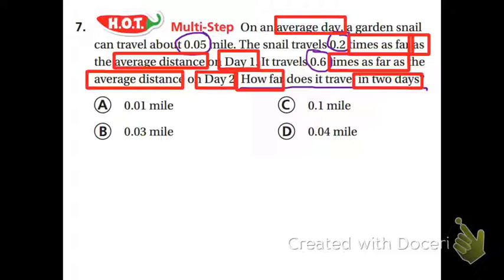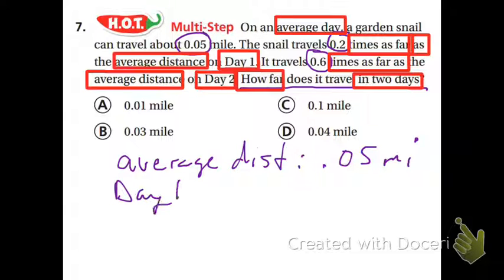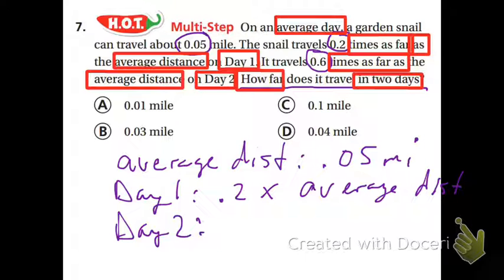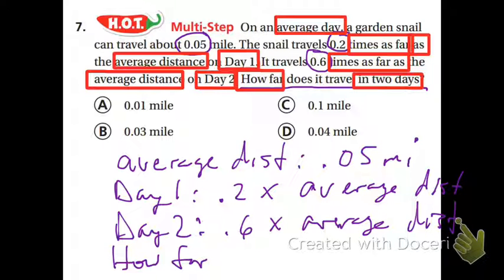So I'm going to write down all this stuff that I boxed and sorted. So I see that an average day, let's say the average distance in a day would be 0.05 miles. The snail travels on day one. The snail travels 0.2 times as far, and I'm just using the times symbol there, as the average distance. So I'm going to say 0.2 times the average distance. And then on day two, the snail travels 0.6 times the average distance. And then the question is, how far in two days?